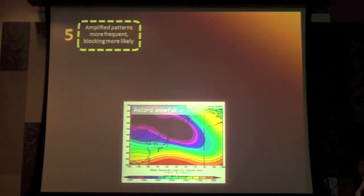That record snow in Japan I showed you. Here's Japan right here. Again, a very large wave in the jet stream but no block.